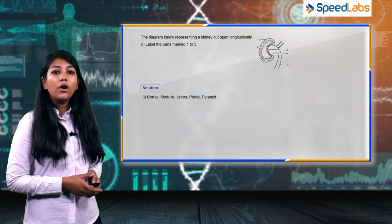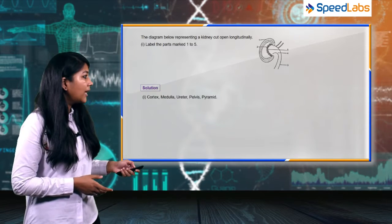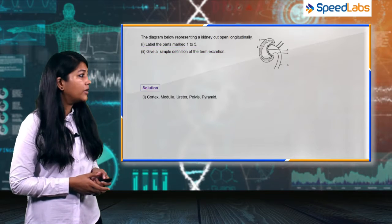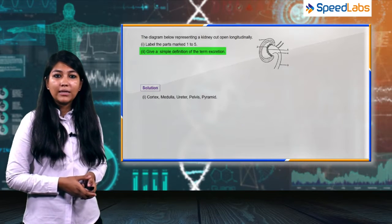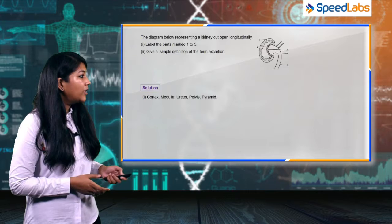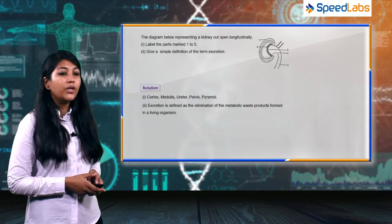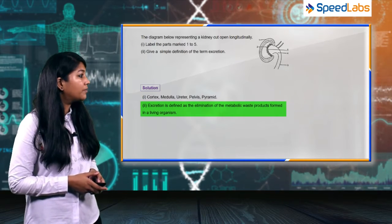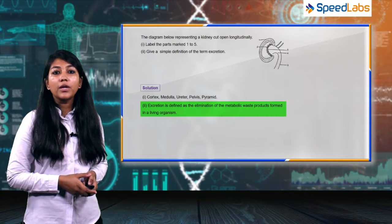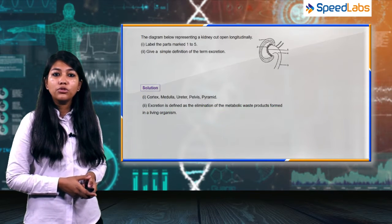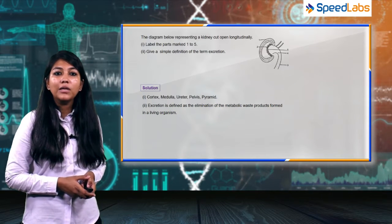Now moving on to the second part of this question: give a simple definition of the term excretion. The definition is that excretion is defined as the elimination of the metabolic waste products formed in a living organism.